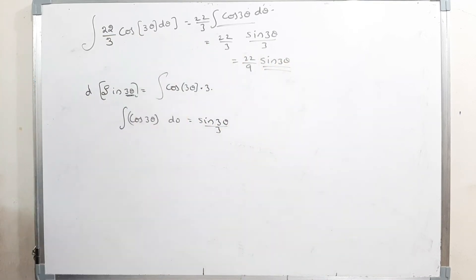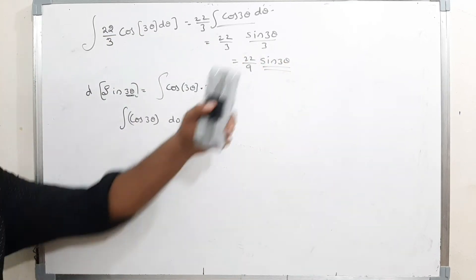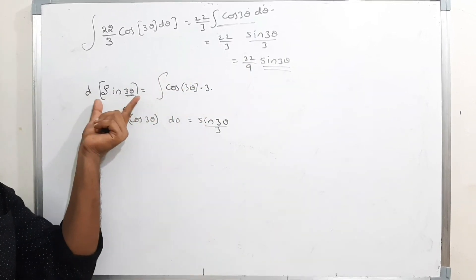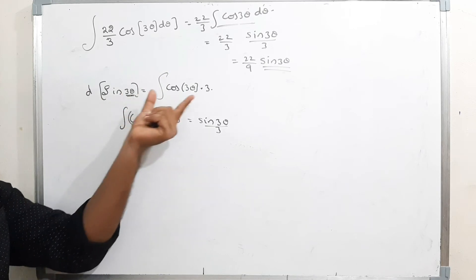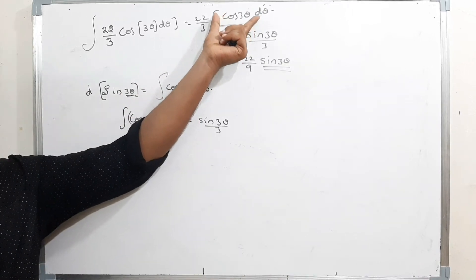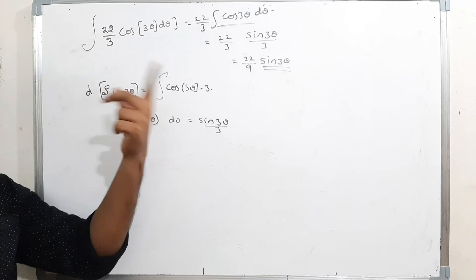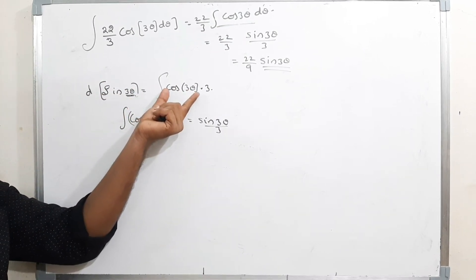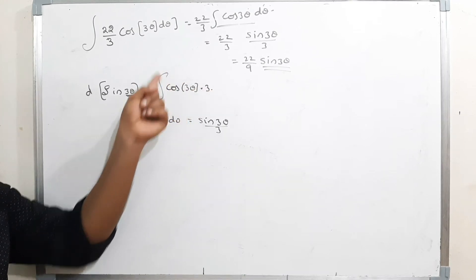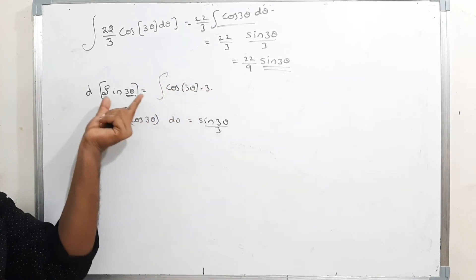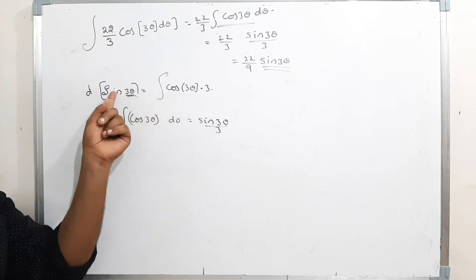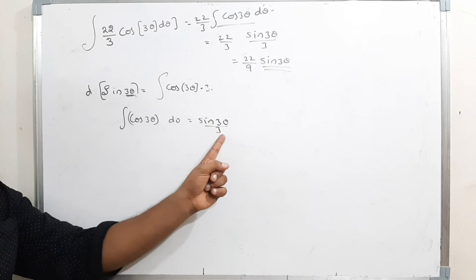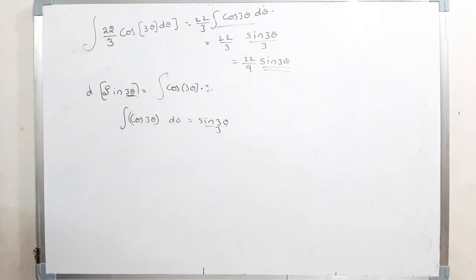To solve integration you should imagine what you would differentiate to get the given expression. If you differentiate sin(3θ) you get cos(3θ) times 3. Therefore the integration of cos(3θ) is sin(3θ)/3. Keep it and you will get the answer.